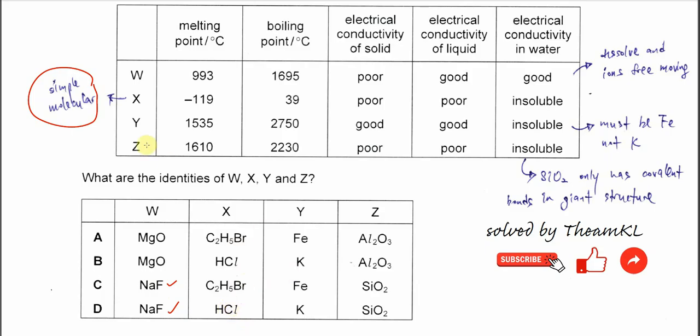So let's move on to Y. Y, the melting point is quite high, 1500 something, boiling point is 2700 something, and electrical conductivity of solid is good. So from here, we know that this should be a metal, and electrical conductivity of liquid is good, insoluble. This is the part. This one is insoluble, means it's a metal and it's insoluble.